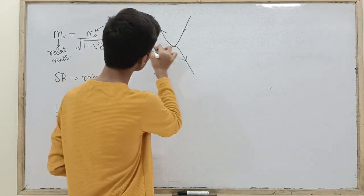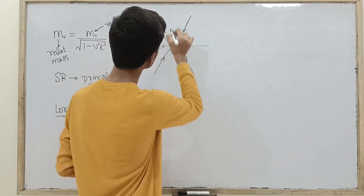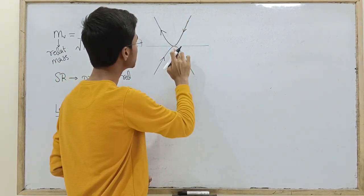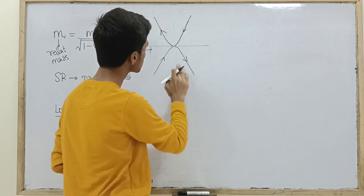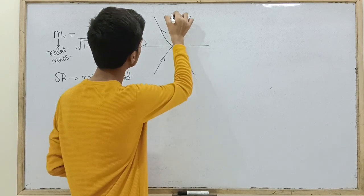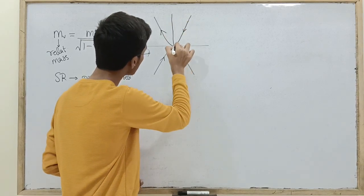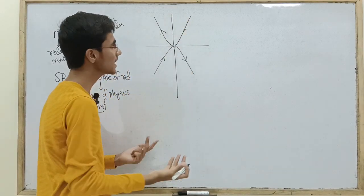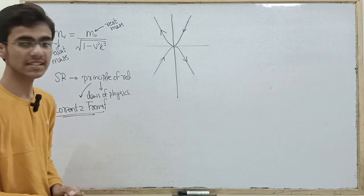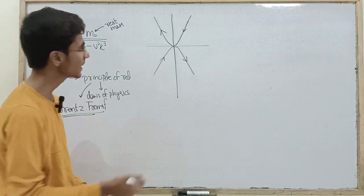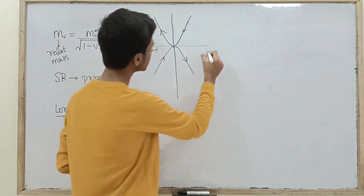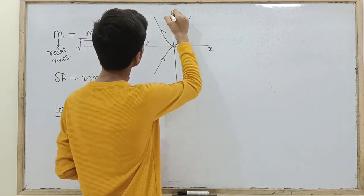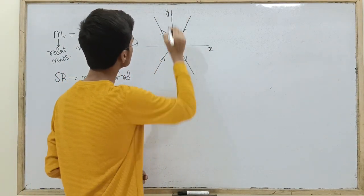We need not know anything about the forces, because if there is a collision, momentum conservation is all that we need. We don't need to know the exact kind of force that is acting. Let's label the axes as X and Y.